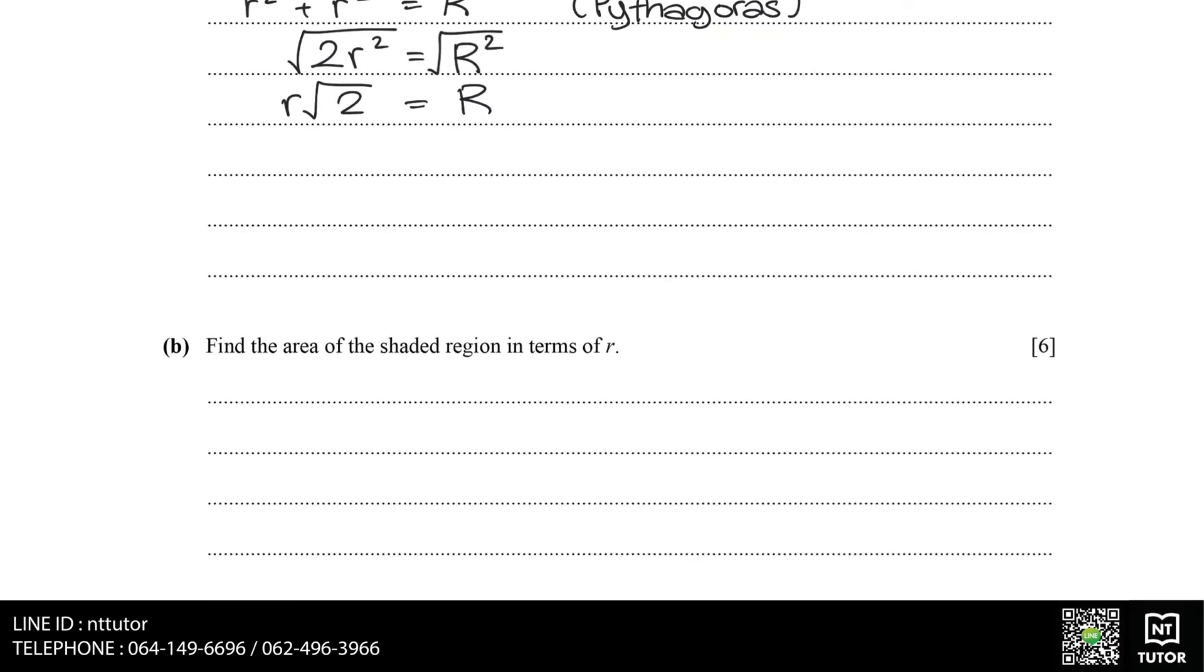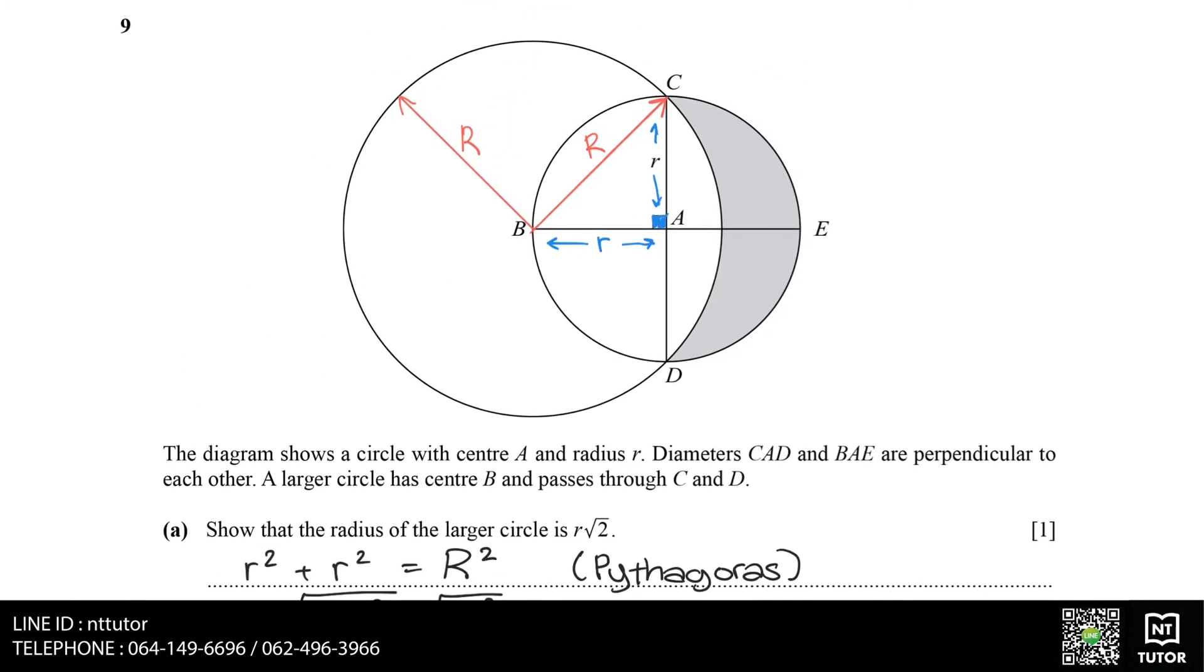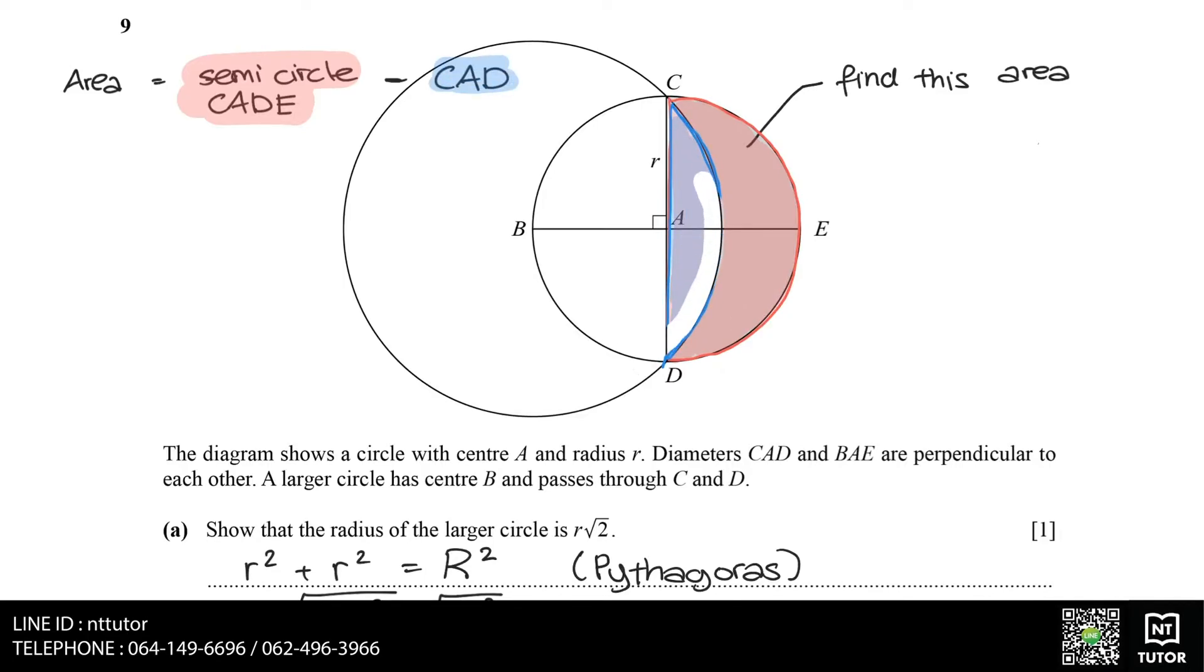Part B: Find the area of the shaded region in terms of R. The area of the shaded region equals the area of the semicircle CADE minus shape CAD. The area of the semicircle CADE is very easy to find, however shape CADE is slightly more complicated. Shape CADE can be found from the area of sector CBD minus the area of triangle CBD.